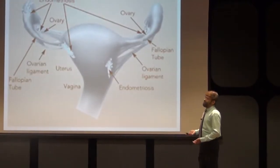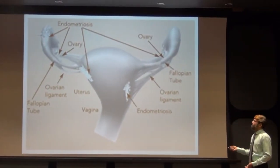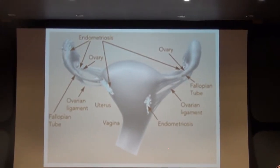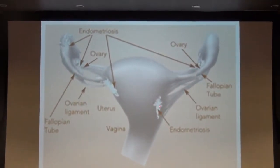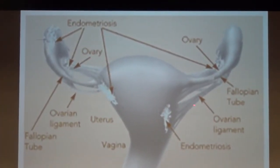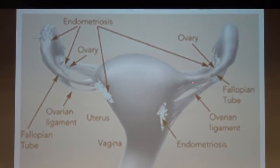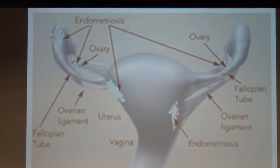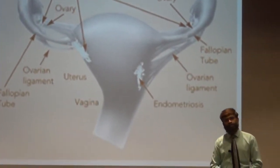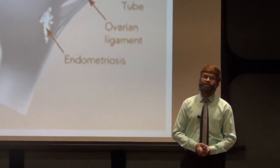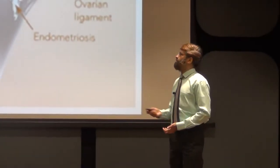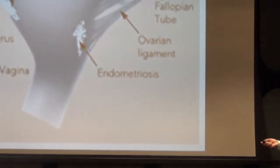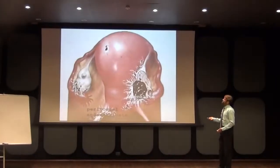Here we can see the photographic appearance of endometriosis — associated with the uterine cavity, the ovarian ligaments, the fallopian tubes, and the ovary. If endometriosis gets associated with the ovary, we call it chocolate cyst of ovary or powder burns. This picture shows the involvement and sites of endometriosis.